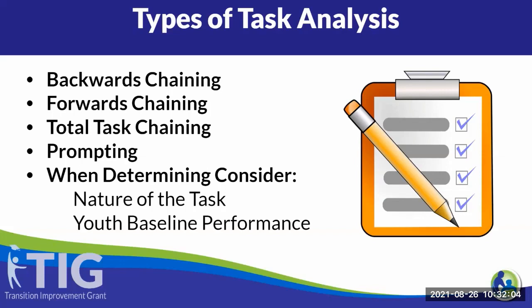Prompting is also used in conjunction with chaining to teach individual skills. In determining which chaining strategy to use, consider the nature of the task and the youth's baseline performance. For example, if a task has a strong natural reinforcer at the end — such as cooking a preferred meal and getting to eat it — backwards chaining would capitalize on that natural reinforcer. On the other hand, if a youth is most successful when the first few steps are given, forward chaining may be best. This should be a discussion with the team to identify the best approach for that student.